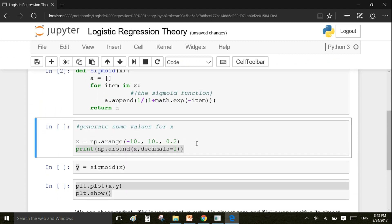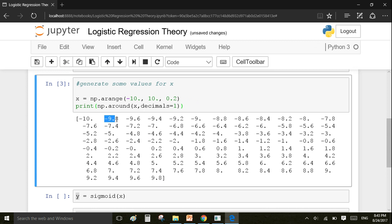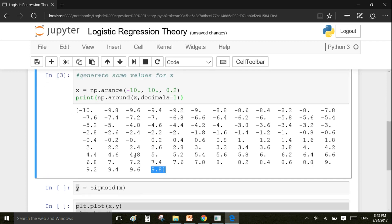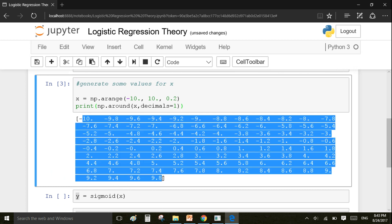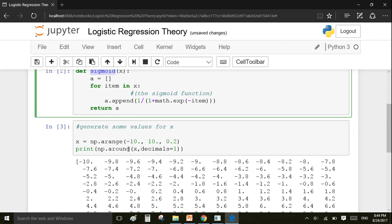Now I'm going to generate some values for x. These values will be ranging from minus 10 to plus 9.8 with a difference of 0.2. For example, it is minus 10, minus 9.8, minus 9.6, and then 0, 0.2, 0.4. And then finally, the last value is 9.8.